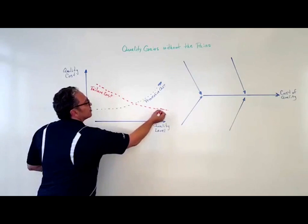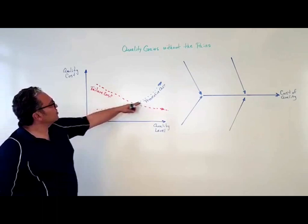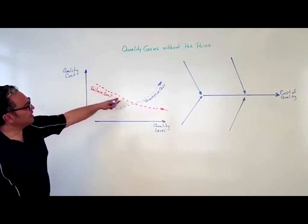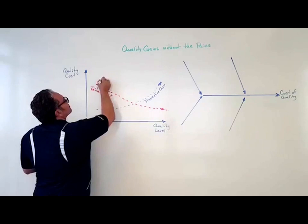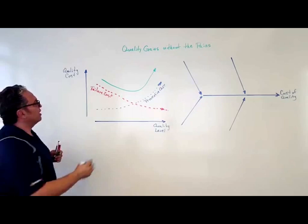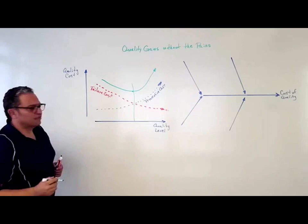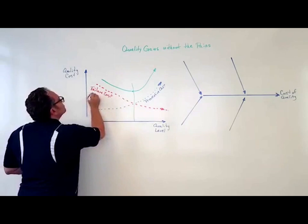Failure cost is going down as quality level goes up. Prevention cost is going up. What is that doing then? If we add up these two costs, we end up with a quality cost curve that kind of looks like that, and our minimum quality cost is here at this intersection. So here we have our minimum quality cost.